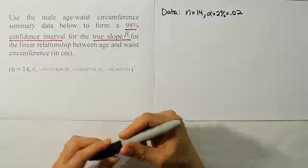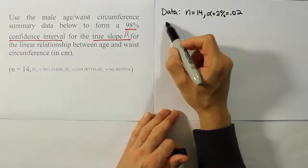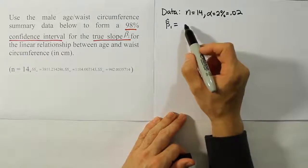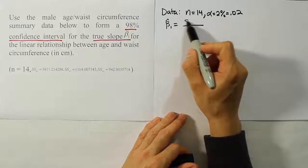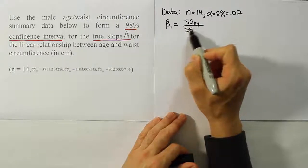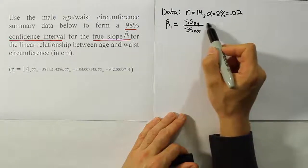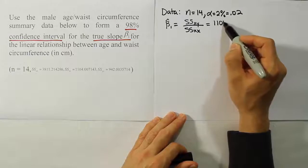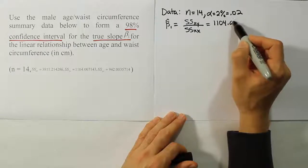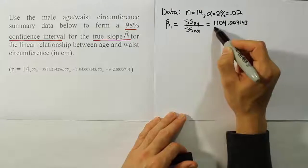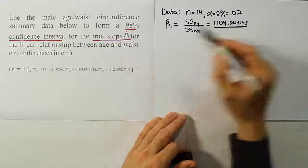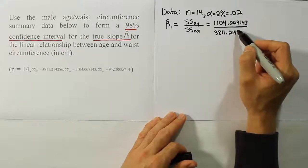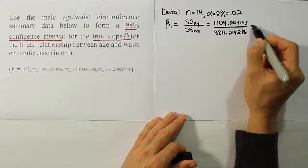Now the data step is quite involved, so let's begin right away. The first thing we want to do is to look at the beta1 hat point estimator for the beta1 value. We'll have sum of squares for xy over sum of squares for xx in order to calculate the beta1 hat value. These values are provided in the problem, so we have 1,104.007143 divided by SSxx, which is 3811.214286.